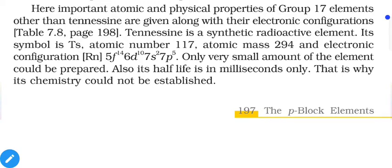Tennessine is a synthetic radioactive element — it does not occur naturally. Its symbol is Ts, atomic number 117, atomic mass 294, and electronic configuration [Rn] 5f¹⁴ 6d¹⁰ 7s² 7p⁵. The common electronic configuration of this group is ns² np⁵. Only a very small amount of the element could be prepared, and its half-life is in milliseconds, which is why its chemistry could not be established.